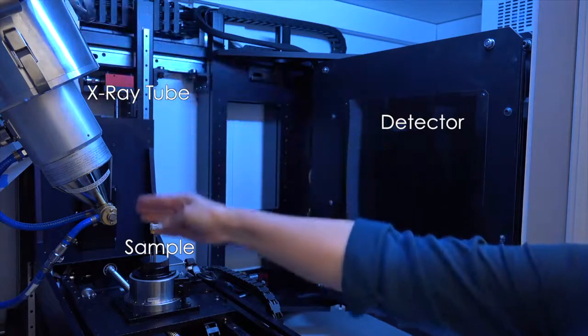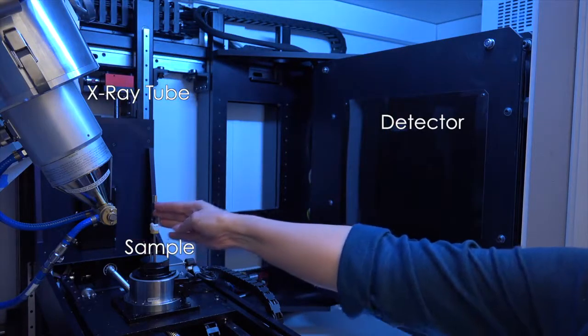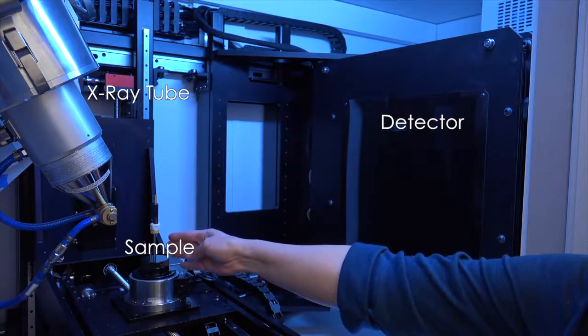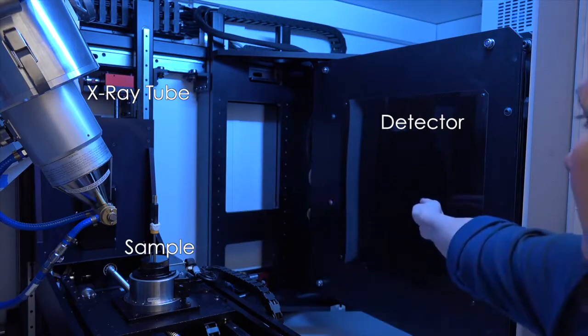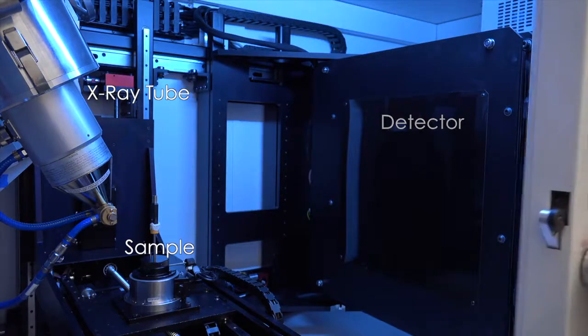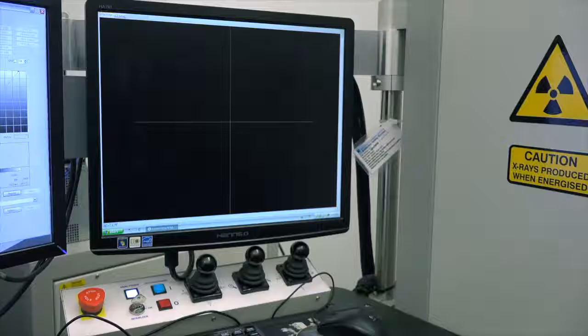When the x-rays reach the sample, some are absorbed by the sample and some are transmitted through to a detector. The detector is like a digital version of film and sends the image information directly to the computer monitor.